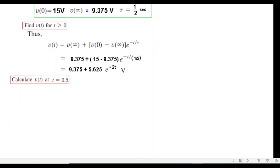To calculate v(t) at t equals 0.5, we put t equals 0.5 into the equation. Let me solve this with the help of a calculator.